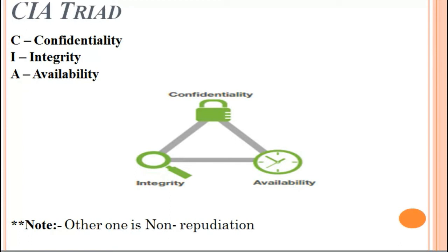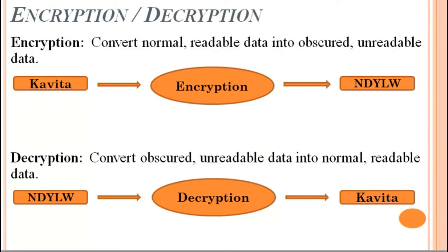Encryption is the process in which plain text is converted into non-readable text or cipher text, so no one can understand the actual meaning of the converted message. For example, the word 'Kavita' — everyone understands it is a girl's name. When we apply an encryption algorithm, the result is 'N-D-Y-L-W', which no one can understand. That is the encrypted form of 'Kavita'.